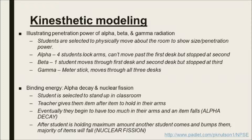For binding energy, I have a student stand in the middle of the room and keep piling items into their arms until one or two fall off to the side — that represents alpha decay, where the nucleus has gotten so big it just can't hold all the items anymore and one falls away to balance things out. To show fission, I have a willing participant bump into the other student, making all the items go everywhere, just like in nuclear fission.